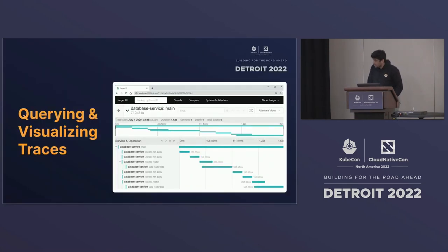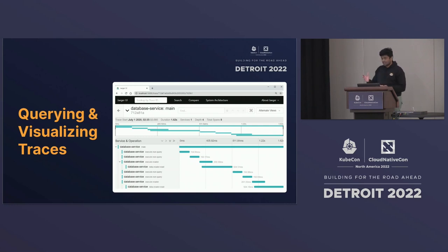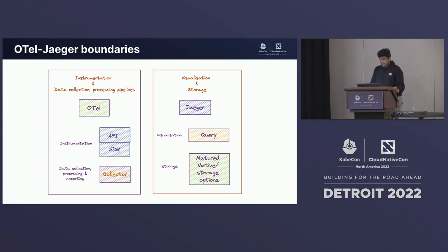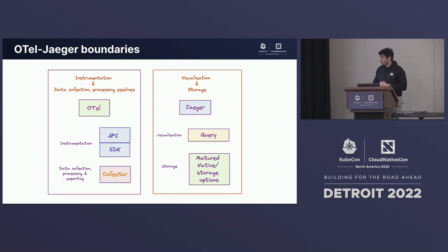Querying and visualizing the traces: if you move to the OpenTelemetry collector, there is no built-in path to connect to, visualize, or store traces. The OpenTelemetry project is all about collecting and instrumenting data. Whereas with Jaeger, you can use the Jaeger UI to visualize data. If you are moving from Jaeger to OpenTelemetry, make sure you know how your Jaeger UI integrates for querying traces. OTL and Jaeger boundaries: OTL covers API, SDK, and the collector, whereas Jaeger covers querying and mature native storage backends. In future, Jaeger will evolve into a platform for traces, while OpenTelemetry will be the instrumentation and collection pipeline for all observability data.